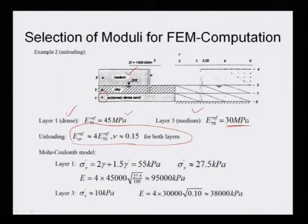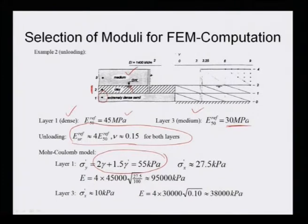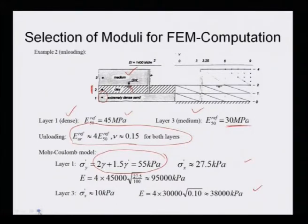For the Mohr-Coulomb model, sigma_y (vertical stress) = 2*gamma + 1.5*gamma. Layer 1 is dense, with 1.5*gamma_prime since the water table is there. Then sigma_prime is found, and E can be obtained. These are examples of how to find E based on correlations, and once E is calculated it is used for analysis since soil stiffness is required for analysis.